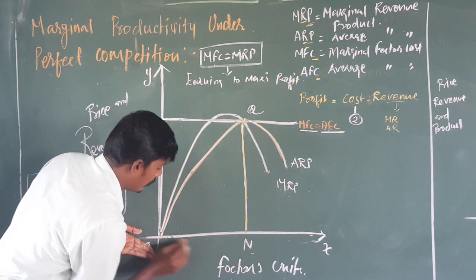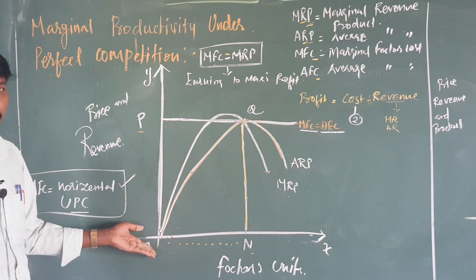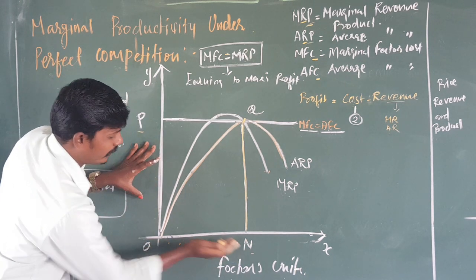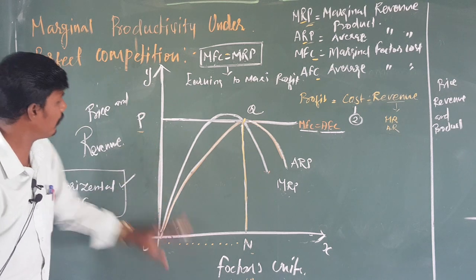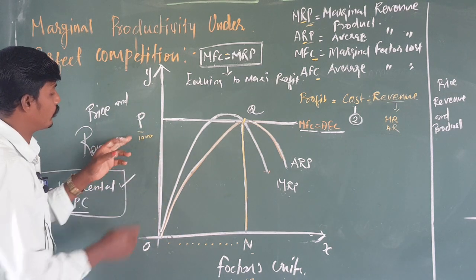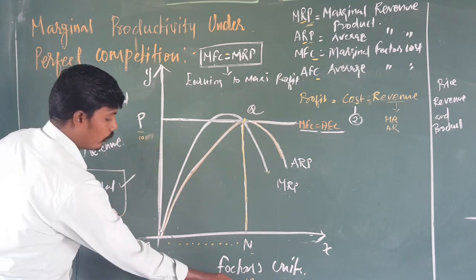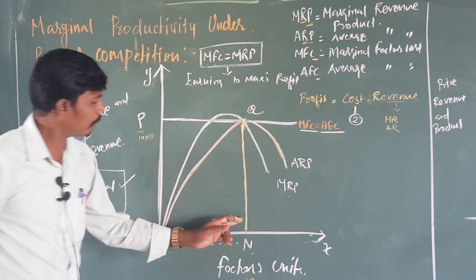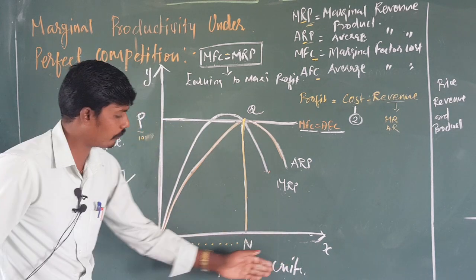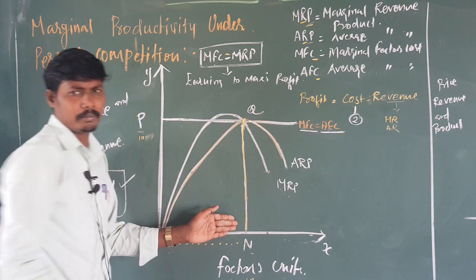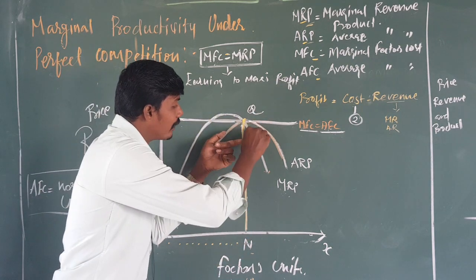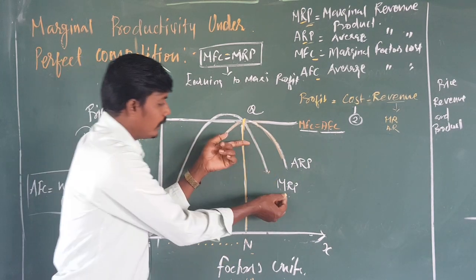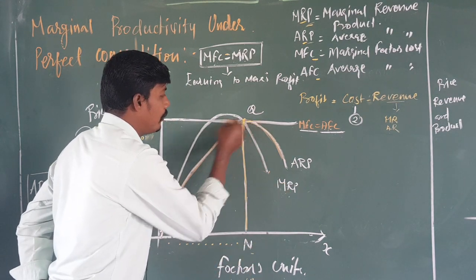Why does hiring stop at equilibrium? Because beyond that point, the factor units may not be available at the same price, and the revenue product decreases. The marginal revenue product declines, meaning the revenue earned from an additional unit of factor input is reduced.